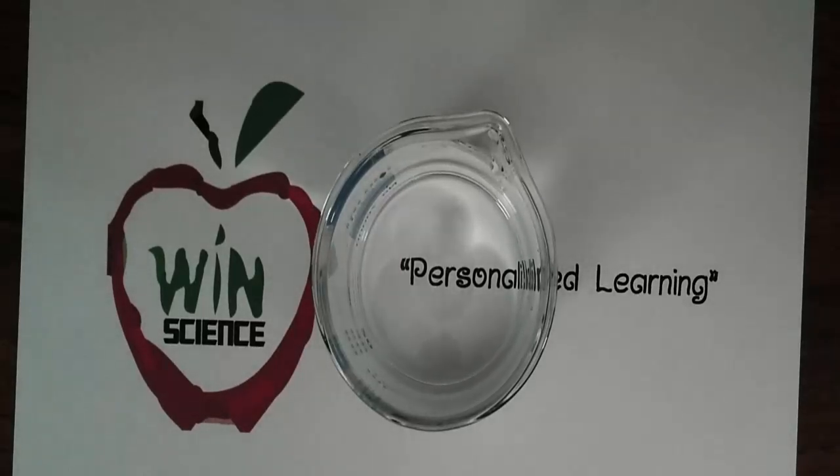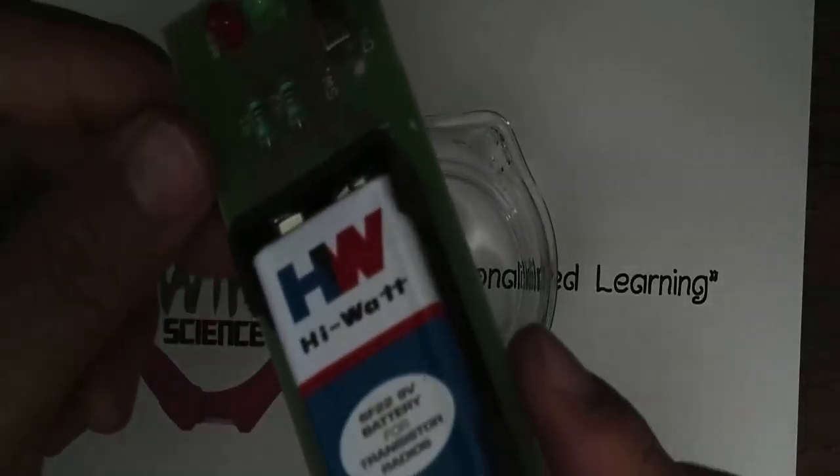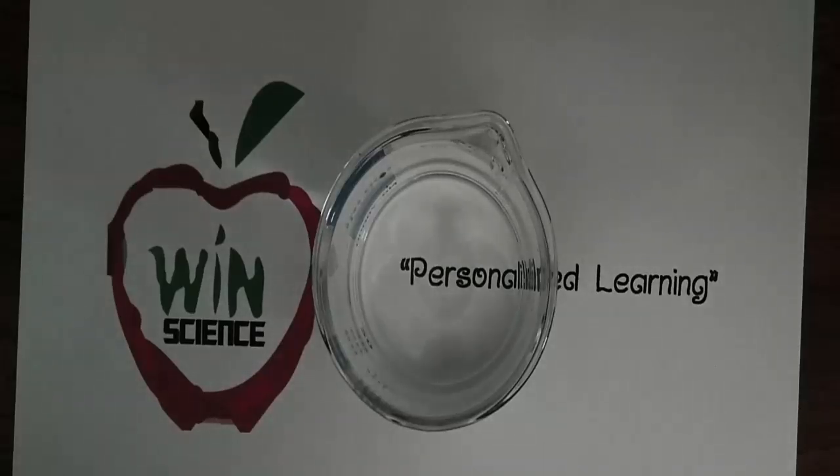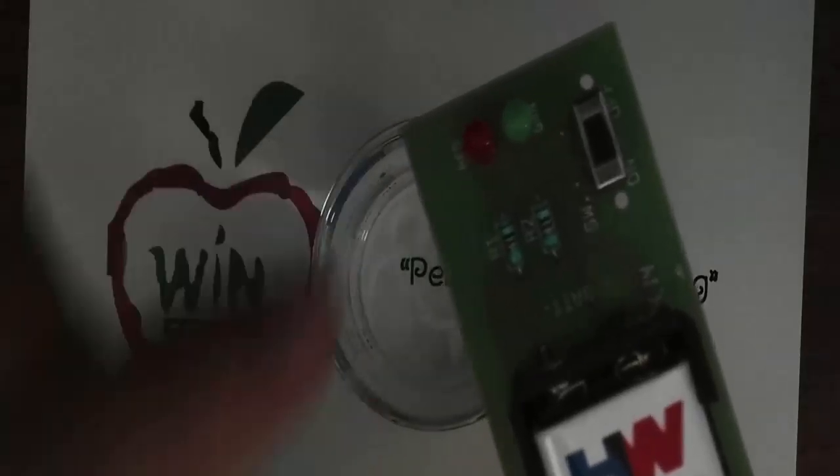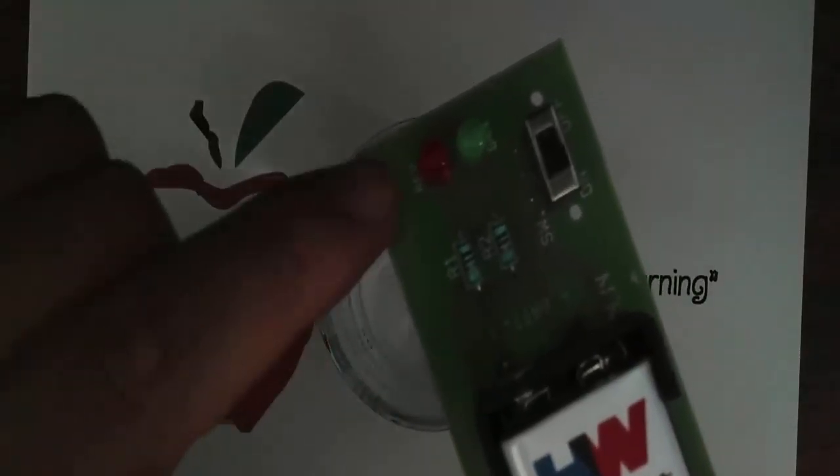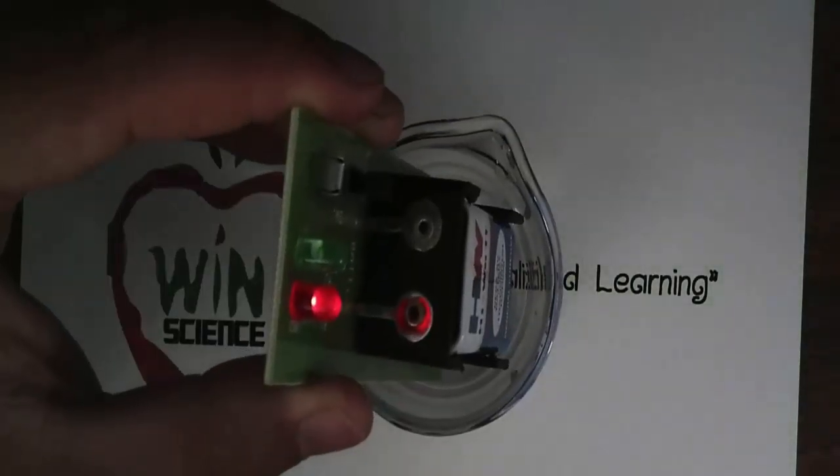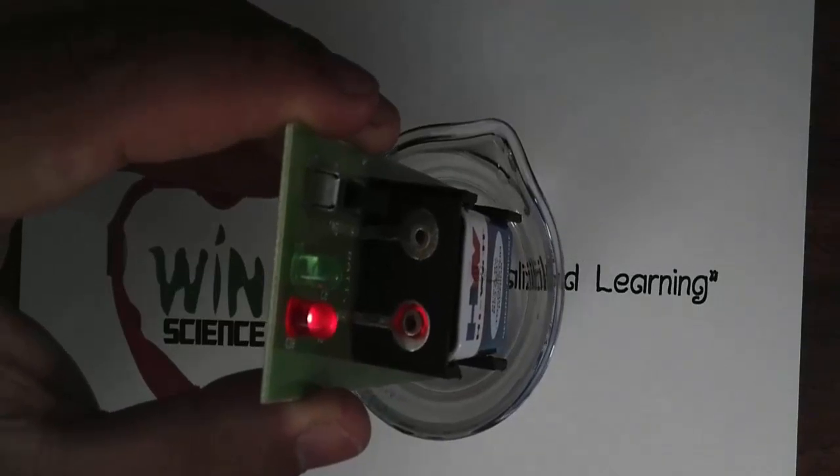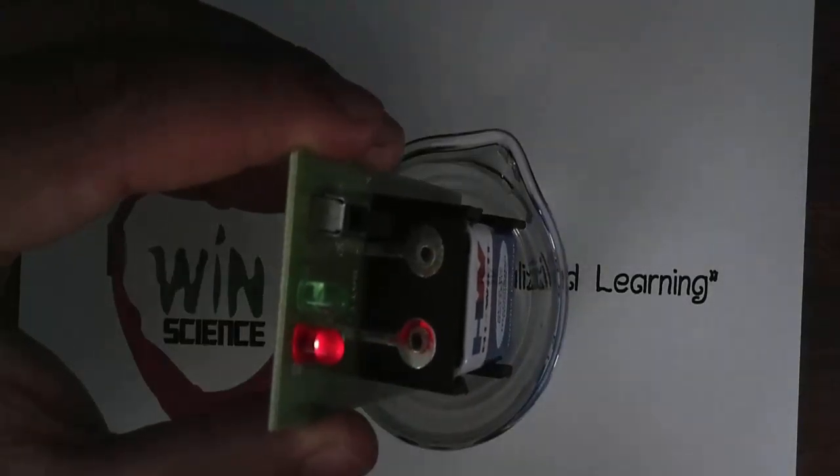Now water, pure water itself does not conduct electricity. I have a conductivity tester here. Let's see if there are a lot of minerals added in this water. If we look at the conductivity tester, if this light turns on, that tells you there are minerals in the water. And look at that. That tells you there are a lot of minerals added to this water.